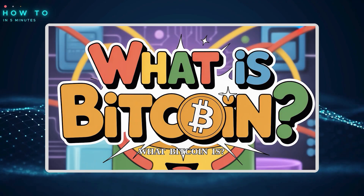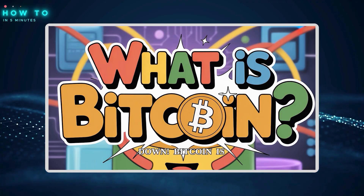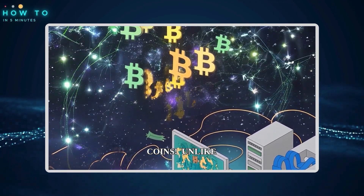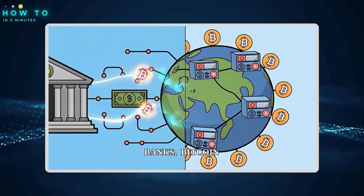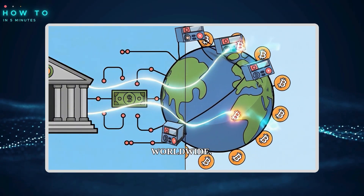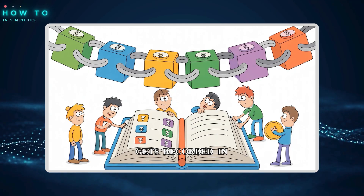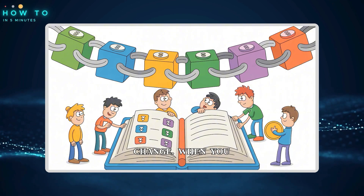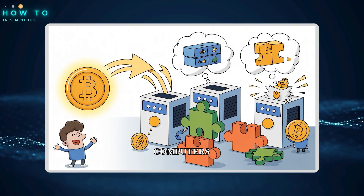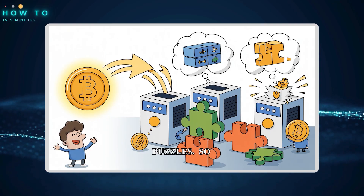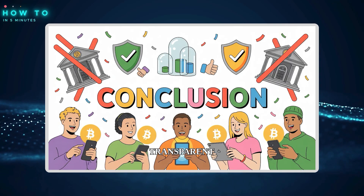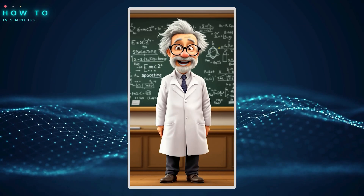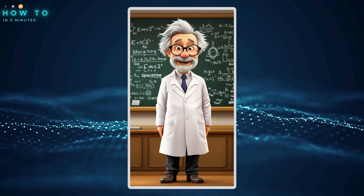Here is the result: 'Hey there! Ever wondered what Bitcoin is? Let's break it down. Bitcoin is digital money that exists only on computers — no physical coins. Unlike regular money controlled by banks, Bitcoin runs on a network of computers worldwide. Every transaction gets recorded in the blockchain, a permanent record book everyone can see but nobody can change. When you send Bitcoin, computers verify it's real by solving math puzzles. So Bitcoin is secure, transparent digital cash that doesn't need banks — pretty cool, right?'